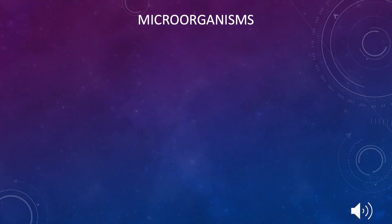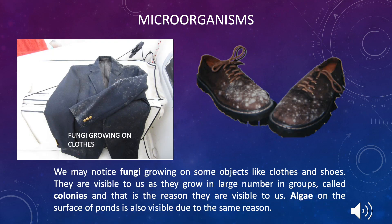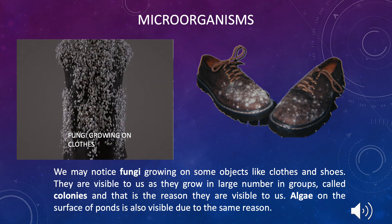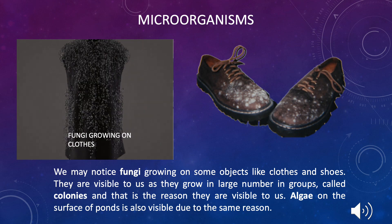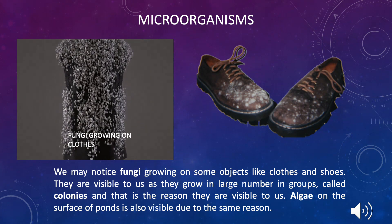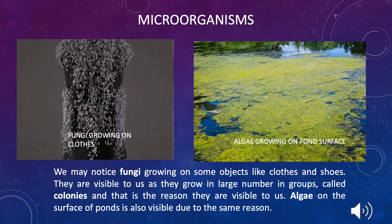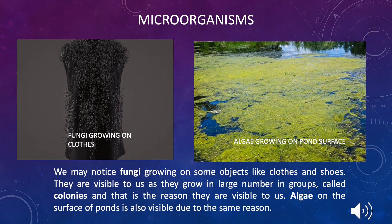At times we see very tiny organisms called fungi. They start growing on objects like shoes, clothes, jackets, etc. We are able to see these organisms because they are present in large numbers and found in groups called colonies, and that is why they are visible to the naked eye. But otherwise, if we have to see a particular fungus, we have to take help of an instrument called a microscope. Algae on the surface of ponds is also visible due to the same reason.